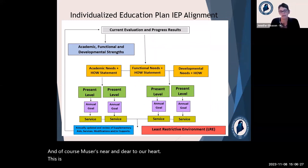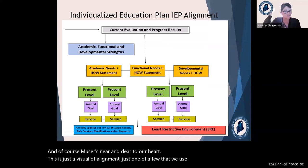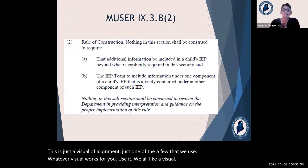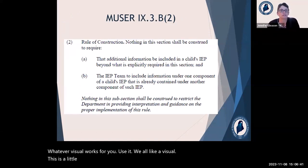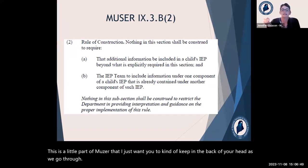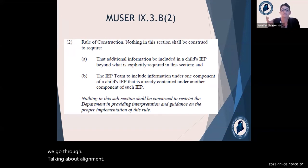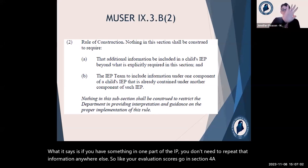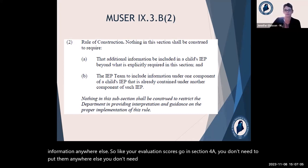This is just a visual of alignment — one of a few that we use. Whatever visual works for you, use it. This is a piece of MUSER to keep in the back of your head as we go through alignment. What it says is: if you have something in one part of the IEP, you don't need to repeat that information anywhere else. For example, your evaluation scores go in section 4A — you don't need to put them anywhere else.